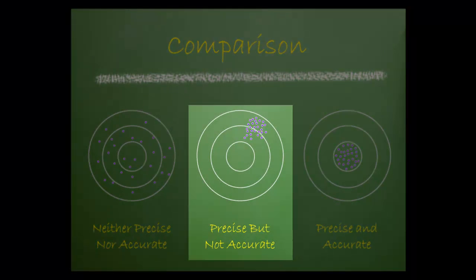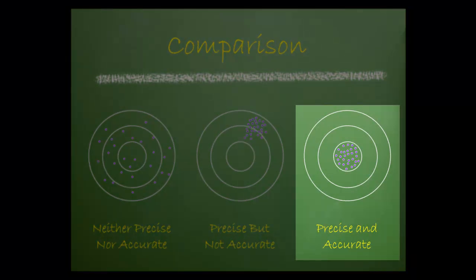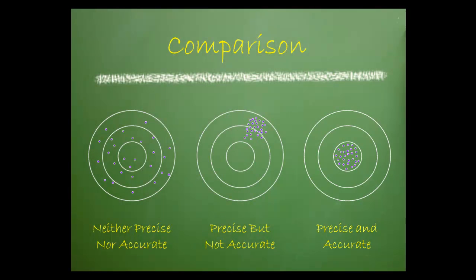If the points are clustered together, but not in the bullseye, you're precise, but not accurate. The goal is to have the points clustered within the bullseye, to be both precise and accurate.